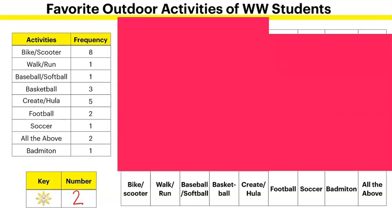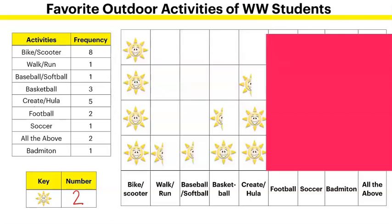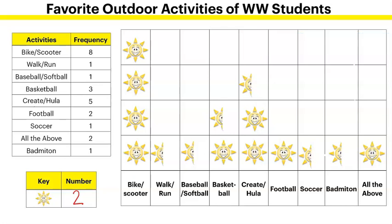I've put the numbers through and I've got my sunshines. I don't want eight different sunshines going across, so I want to make my chart as efficient as possible. Each sunshine is going to be worth two votes. Now let's take a look at how we put our chart together. You can see there's a title for each section — like bike and scooter, which has four sunshines. Walk and run got only one vote, so we put a half sunshine.